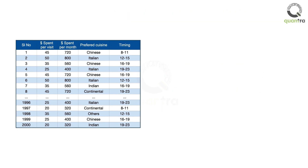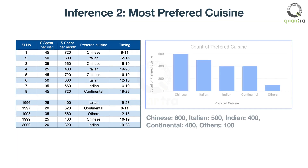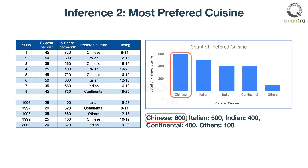You can also calculate which is the most preferred cuisine. You can use a graph as shown. It is easy to visualize that most people chose Chinese, so you want to include more dishes in Chinese cuisine.